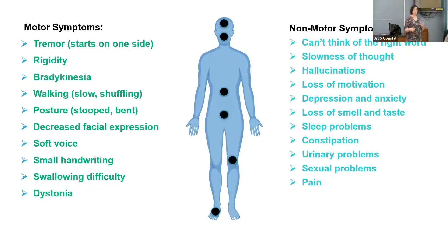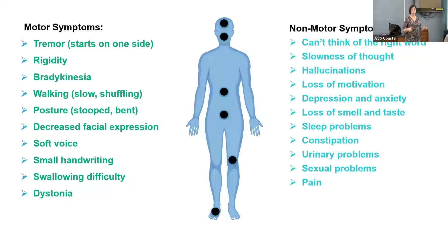Smaller handwriting is often one of the first symptoms patients notice. Swallowing difficulty typically appears further on in the disease due to discoordination of the throat muscles. Dystonia is actually very common but can be difficult to recognize — foot turning in is very common, and we can also get upper extremity arm dystonia, which is basically contracture of muscles forming an abnormal posture.